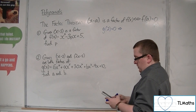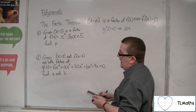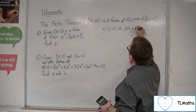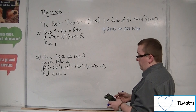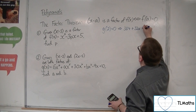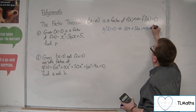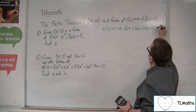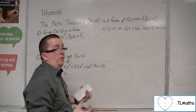Substituting x=2: 6 times 2 to the power of 6 is 384, plus a times 2 to the 5 which is 32, so 32a. Plus 30 lots of 2 to the 4, which is 30 lots of 16, so 480. Plus b lots of 2 squared, so 4b, minus 9 lots of 2 giving minus 18, plus 10, and that's all equal to 0.